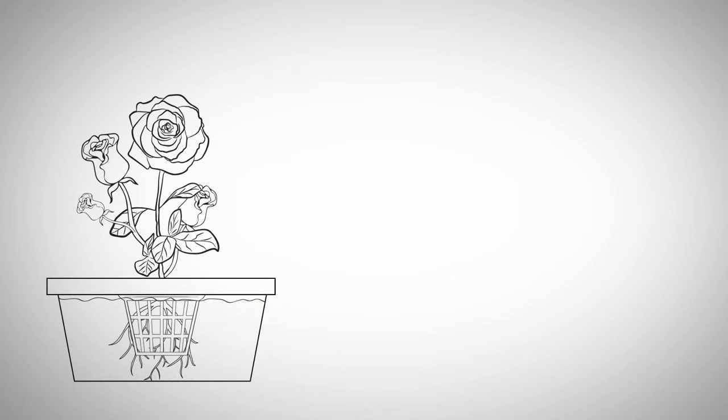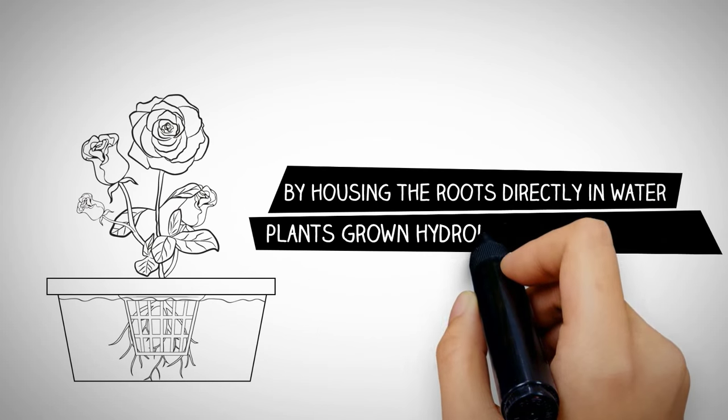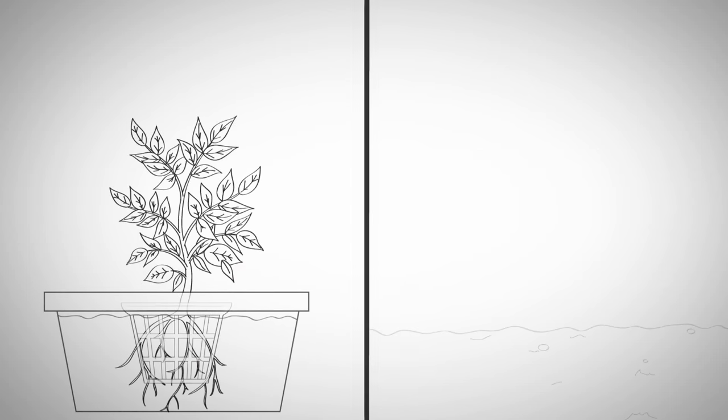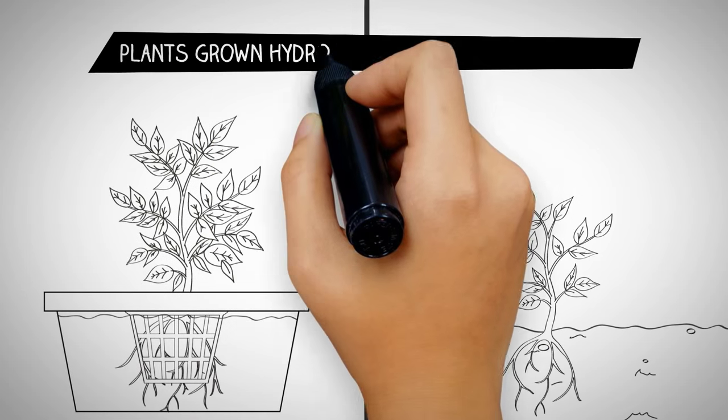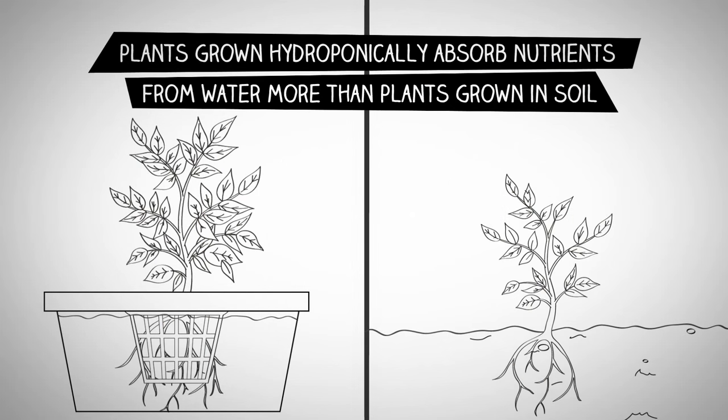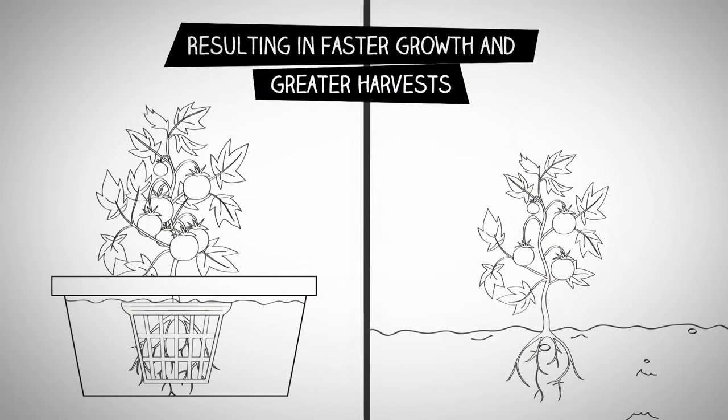By eliminating soil and housing the roots directly in water, the plants grown hydroponically flourished. This was achieved because plants grown hydroponically could absorb nutrients from water much more efficiently than plants grown in soil, resulting in faster growth and greater harvests.